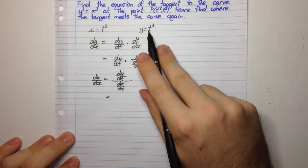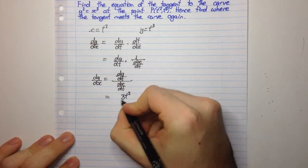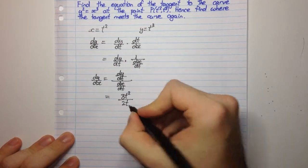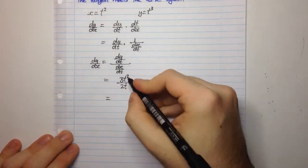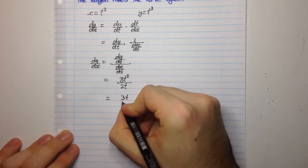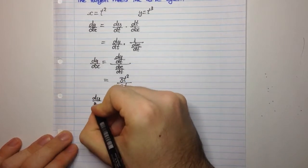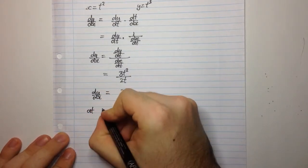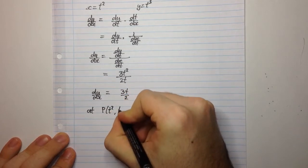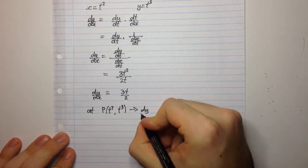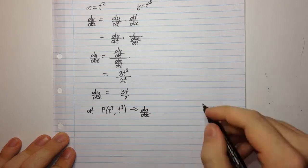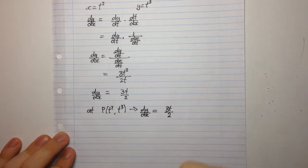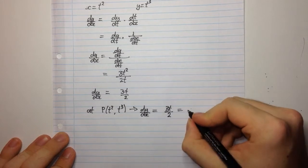dy/dt is differentiating y equals t cubed with respect to t, so that's 3t squared, divided by dx/dt, which is differentiating x equals t squared, giving 2t. We can cancel the t to get dy/dx equals 3t over 2. At point P, dy/dx is still equal to 3t over 2, which is the gradient of the tangent.